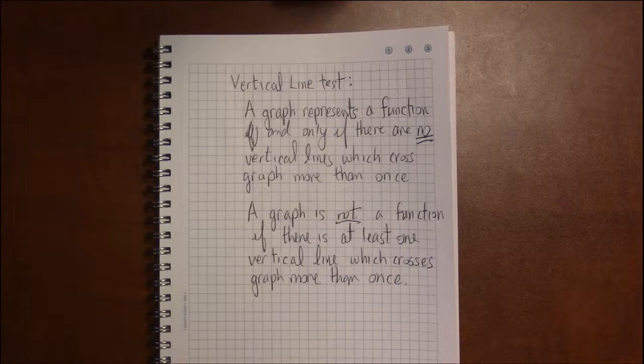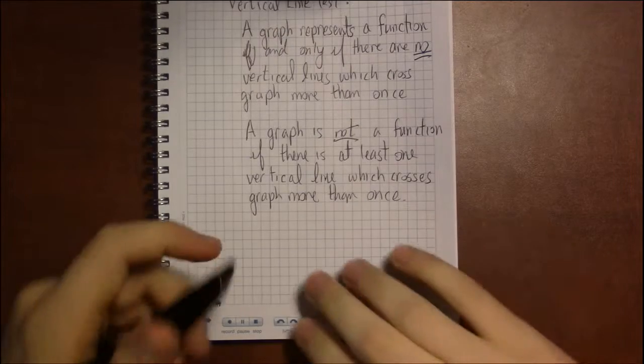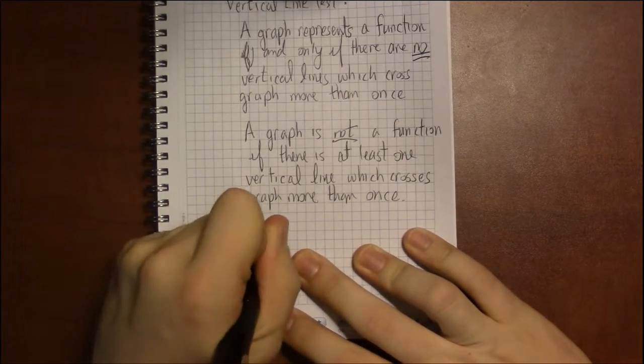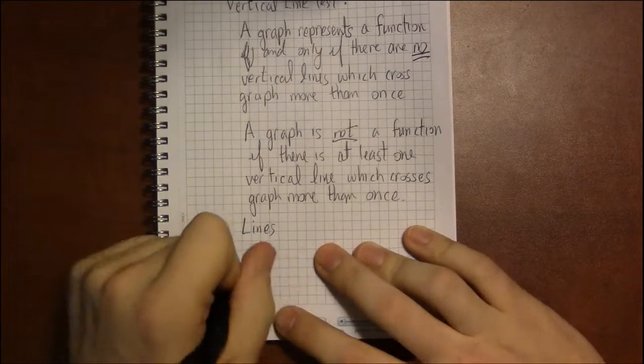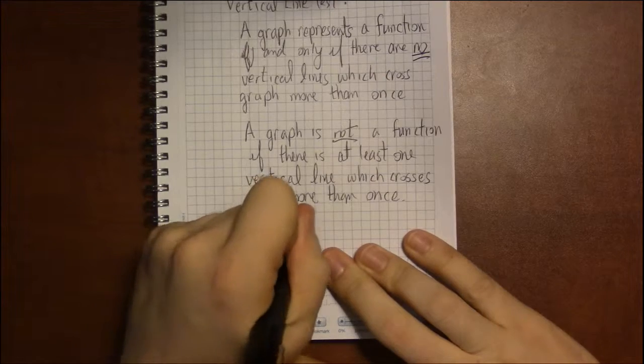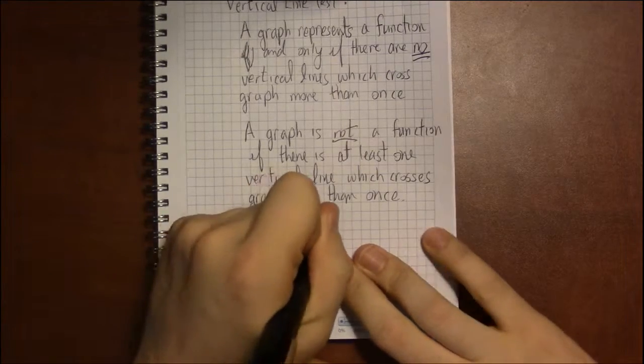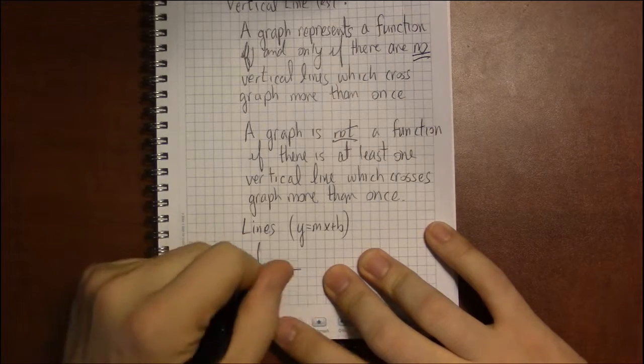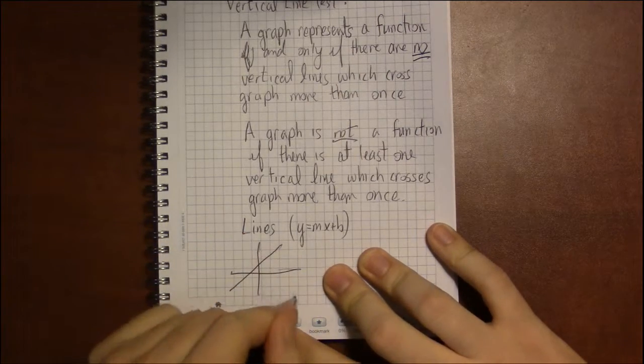So, things that you know that are functions: lines, anything but a vertical line, but standard y equals mx plus b lines, each one of those is a function because each one of those either looks like this or it has a negative slope, it's going downwards.